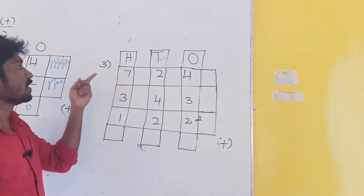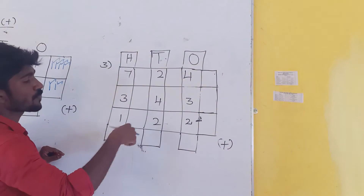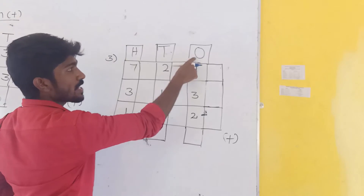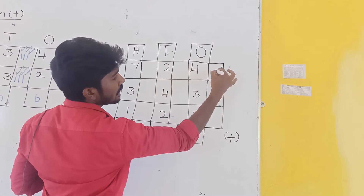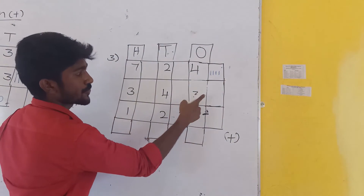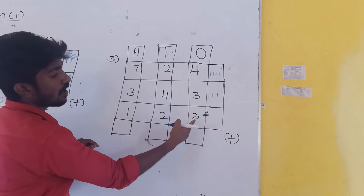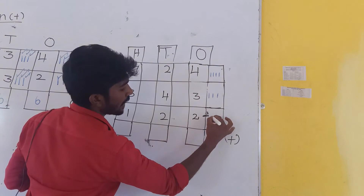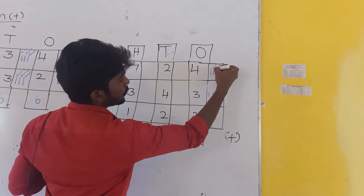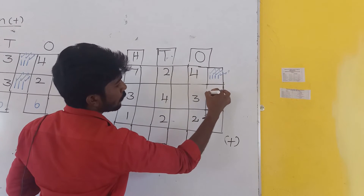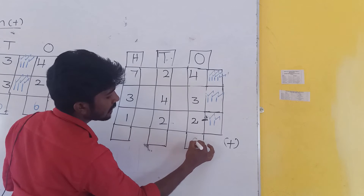Next, third sum. This is 1s value, this one is 10s value, this one is 100s value. First I will start with 1s value: first number is 4, draw 4 lines; second value is 3, draw 3 lines; last value is 2, draw 2 lines. Now add these lines: 1, 2, 3, 4, 5, 6, 7, 8, 9. Answer is 9. 1s value finished.